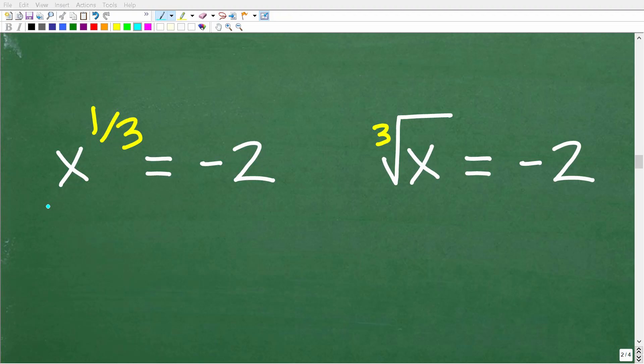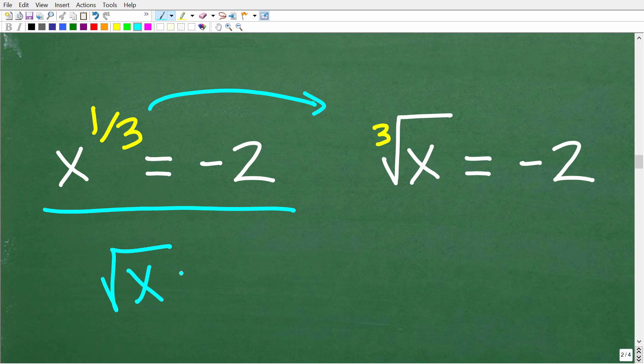Okay, a key concept here to solve this equation is to realize that X to the one third power is equivalent to the cube root of X. So, for example, if you have the square root of X, this is equal to X to the one half power.